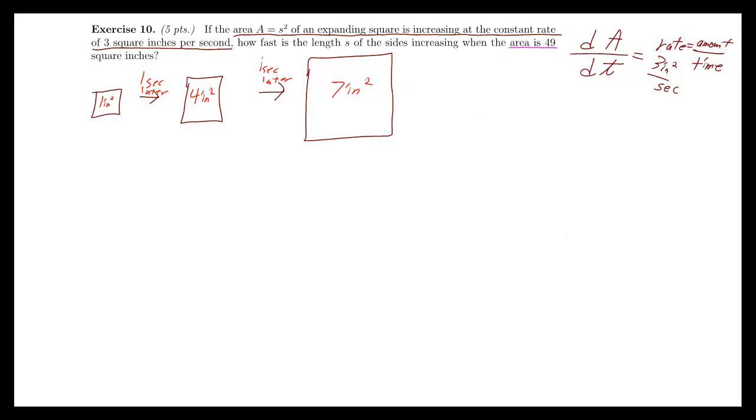Okay, and then they're asking us, how fast is the length S of the sides increasing when the area is 49 square inches? Well, the area is 49 square inches. We can write a nice formula for that. We can just write that A is equal to 49 inches square. And then it says, how fast is the length S of the sides increasing?